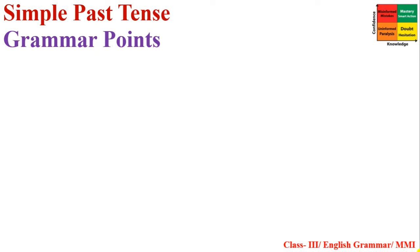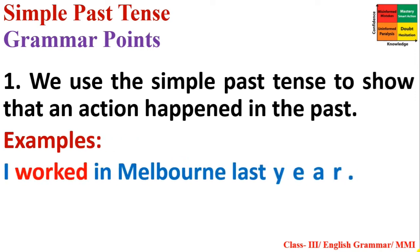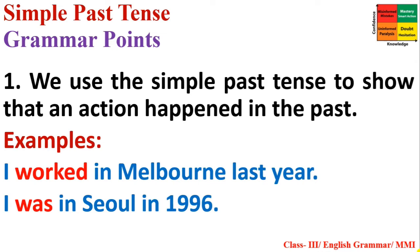Now we will do grammar points. Number one: we use the Simple Past Tense to show that an action happened in the past. Examples: 'I worked in Melbourne last year.' 'I was in Seoul in 1996.' These are events of the past. 'Worked' is the past form of 'work' and 'was' is the past form of 'am.' These are examples of Simple Past Tense.